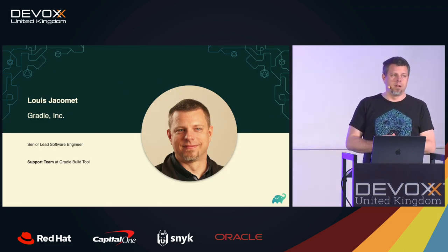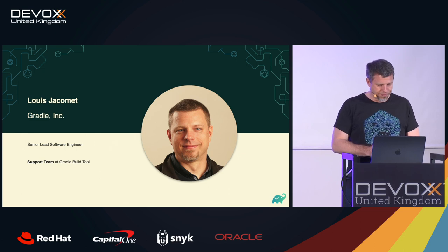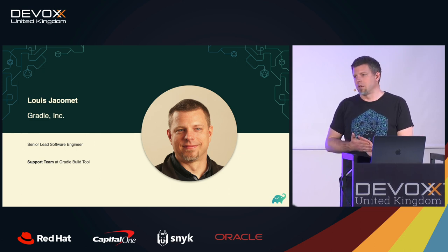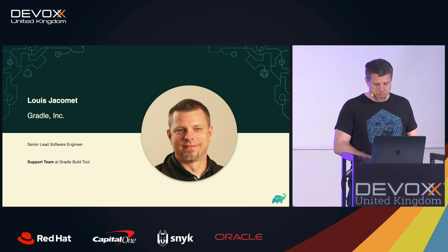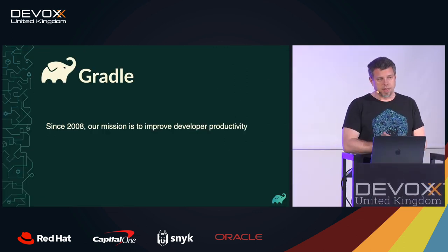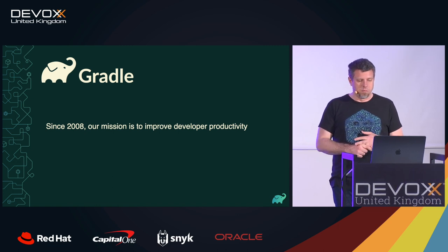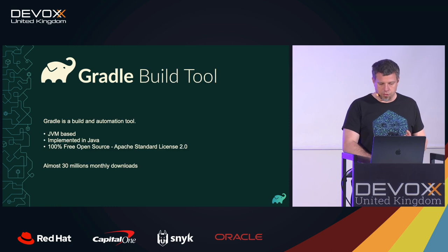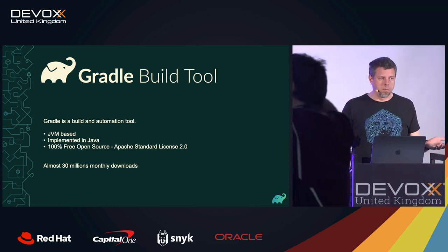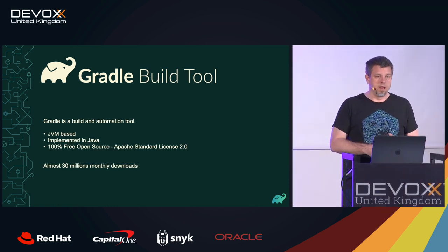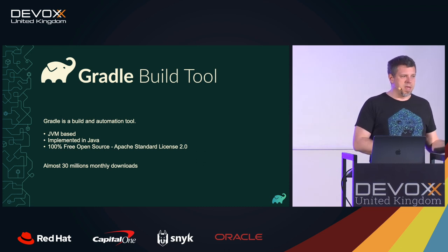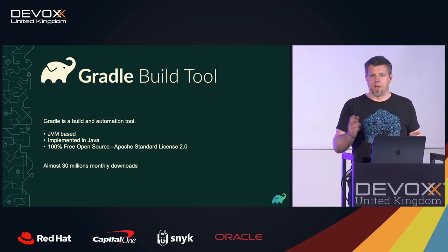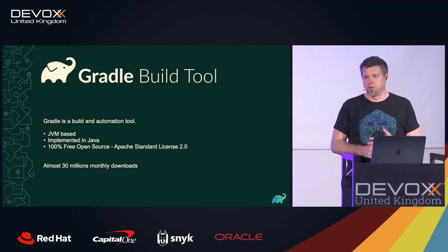My name is Louis Jacomet. I work for Gradle and I'm a senior lead software engineer there, currently heading what we call the support team. At Gradle, since 2008 the mission has been to improve developer productivity. The company has a couple of tools — the Gradle build tool, which is a build and automation tool, JVM-based, written in Java, fully open source under an Apache 2 license, now at about 30 million downloads a month.